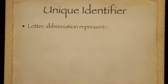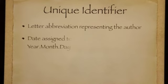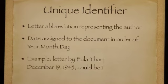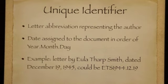Begin with a unique identifier: a letter abbreviation representing the author, followed by a date that you assign to the document in order of year, month, and day. For example, a letter by Eula Tharp-Smith, dated December 19, 1945, could be coded as ETS 1944.12.19.